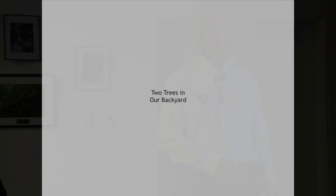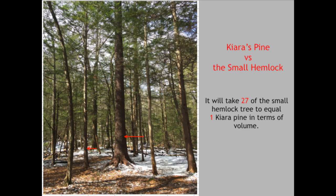Let's reinforce something: one larger tree versus a smaller tree in terms of volume. This is a white pine we named after our friend Kiara Perkins. Kiara's Pine is virtually perfect. There's a little hemlock 10 inches in diameter — do the math and it takes 27 of those hemlocks to equal one of this pine. The hemlock is 67 feet in height — not a slow grower.